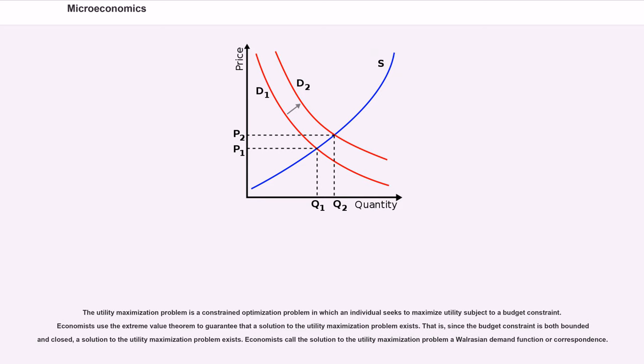Economists call the solution to the utility maximization problem a Walrasian demand function or correspondence.